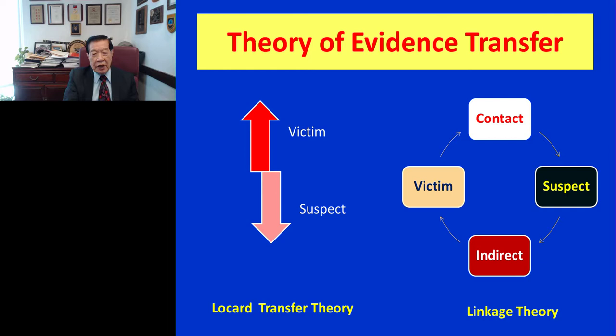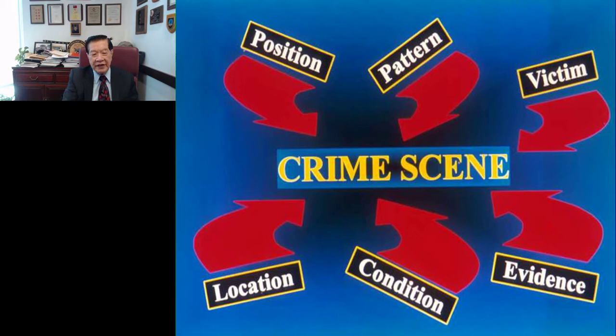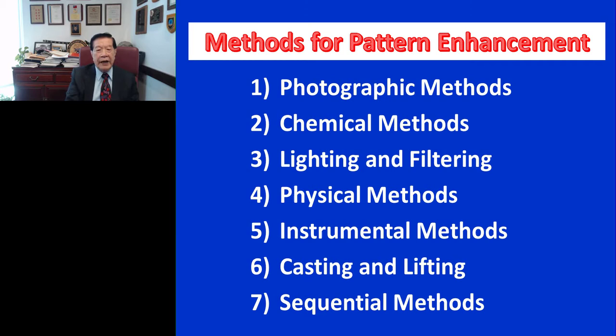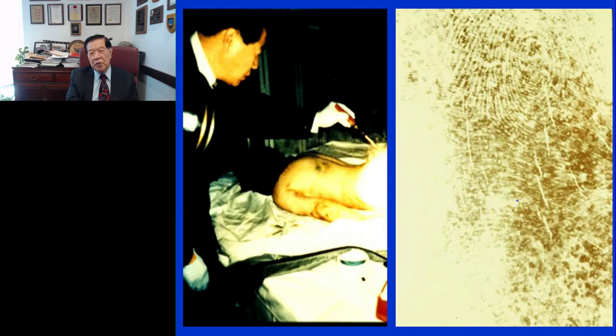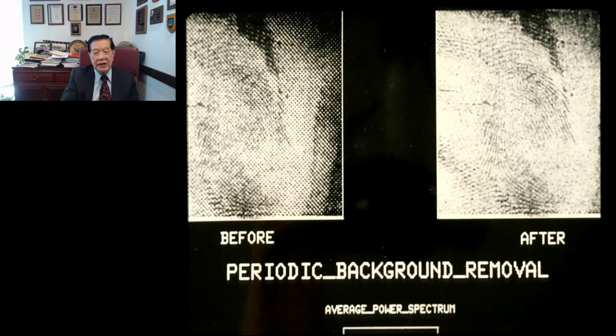At the crime scene, we also have to look at position, pattern, victim, location, condition, and evidence. Pattern enhancement can use photographic contrast, chemical methods, lighting, filtration, physical methods, instrumental methods, casting, lifting, or sequential methods. For example, on a victim's body, we used a combination of side lighting and chemical methods to develop a suspect's fingerprint on the victim's skin. That can later be enhanced to become more visible, more recognizable, and searchable.